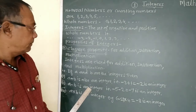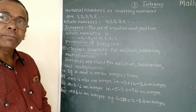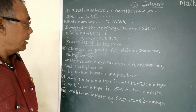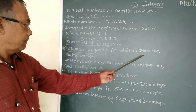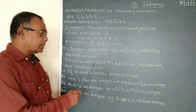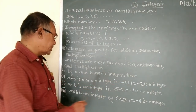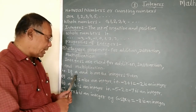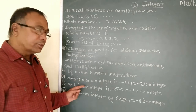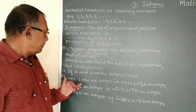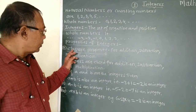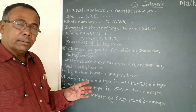Now we will see properties of integers. The first property is the closure property. We have to see the closure property for addition, subtraction, and multiplication of integers. Integers are closed under addition, subtraction, and multiplication — meaning if a and b are integers, then their addition, multiplication, or subtraction will also be an integer.